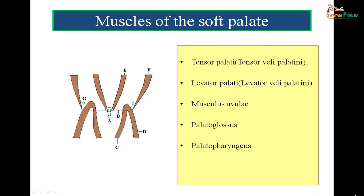The muscles of the soft palate are: tensor veli palatii, levator veli palatii, musculus uvulae, palatoglossus, and palatopharyngeus. To reinforce: tensor veli palatii forms the palatine aponeurosis (F forms B), it splits in the center to enclose A, the musculus uvulae. Two muscles lie on the upper aspect of the palatine aponeurosis — levator veli palatii (E) and palatopharyngeus (D). One muscle on each side lies in relation to the lower surface — the palatoglossus (C).